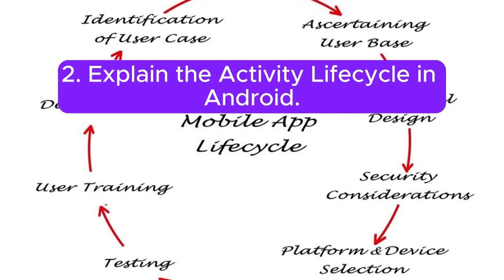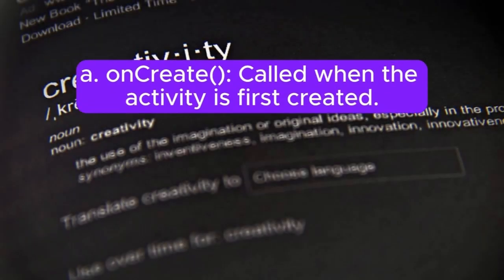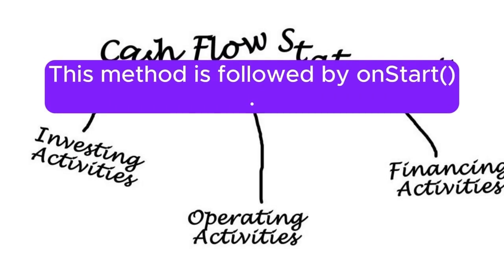Question 2: Explain the Activity Lifecycle in Android. Understanding the Activity Lifecycle is crucial for creating efficient Android apps. OnCreate is called when the Activity is first created — this is where you do all static setup, create views, bind data to lists, etc. This method is followed by OnStart.